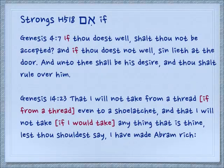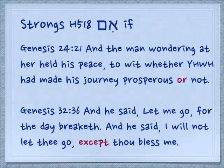Sometimes we have some unusual translations due to the nature of Hebrew. Genesis 14:23 — literally it says, 'if from a thread, even to a shoe latchet, that I will not take, if I would take anything that is thine, lest thou should say, I have made Abram rich.' Genesis 24:21: 'And the man wondering at her held his peace, to wit, whether Yehovah had made his journey prosperous or not.' In Hebrew we say 'if not.' Genesis 32:26: 'And he said, let me go, for the day breaketh. And he said, I will not let thee go, except thou bless me' — if you don't bless me, then I'm not going to let you go.